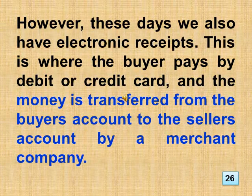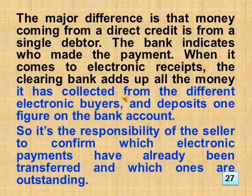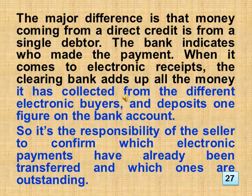These days we also have electronic receipts. This is where the buyer pays by debit or credit card, and the money is transferred from the buyer's account to the seller's account by a merchant company. The major difference is that money coming from a direct credit is from a single debtor, and the bank indicates who made the payment. When it comes to electronic receipts, the clearing bank adds up all the money collected from different electronic buyers and deposits one figure on the bank account. So it's the responsibility of the seller to confirm which electronic payments have already been transferred and which ones are outstanding.